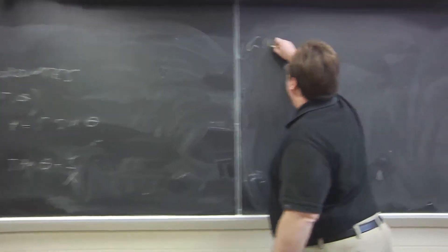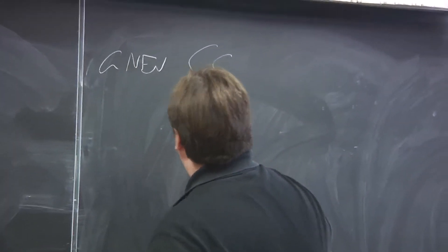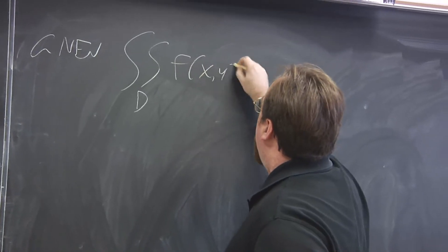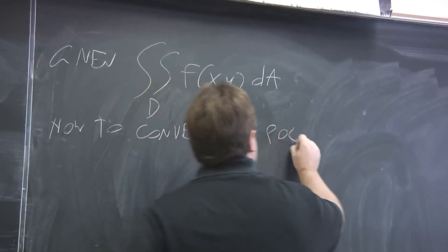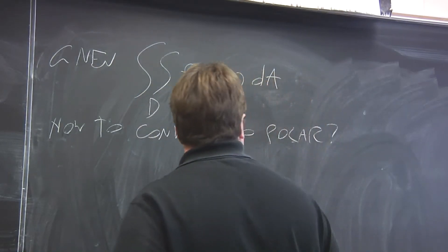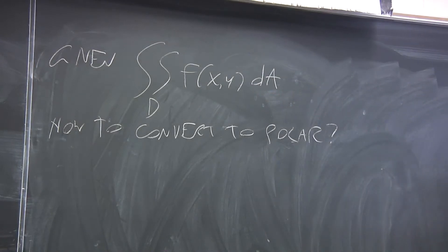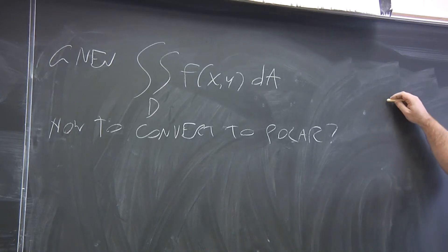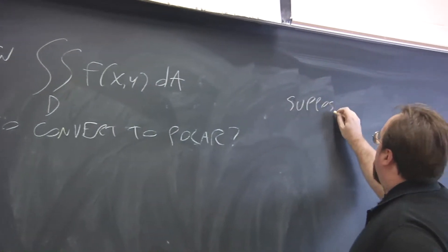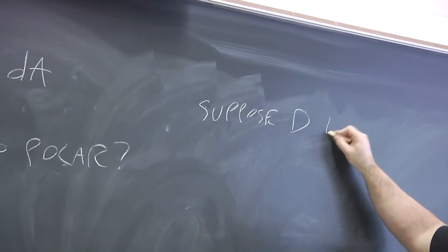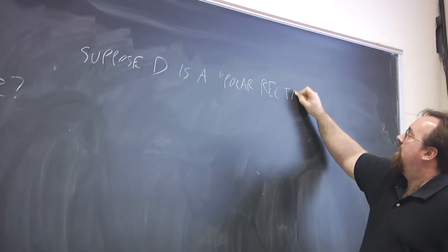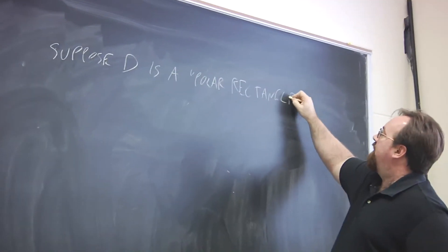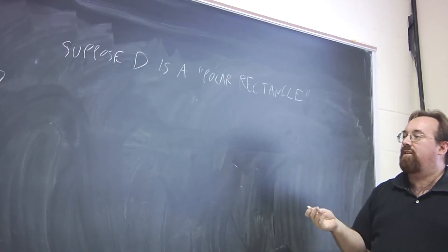So given some sort of double integral of a function f of x and y, how does it convert to an integral in polar coordinates? Well, to get an idea of how to do a conversion, we're going to take a look at suppose your region D is what's called a polar rectangle. So this is not a rectangle literally in terms of x and y, but it is a rectangle in terms of r and theta.